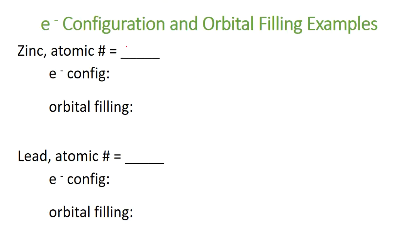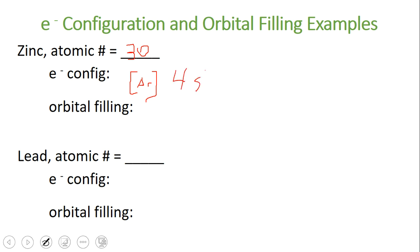Zinc, which is number 30, you can say is everything argon is — which is 18 — plus 4S2, then 3D10. Argon is 18, plus 2 is 19 and 20, and then plus 10 is 30. So that's another way to look at that.